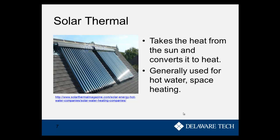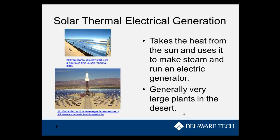Solar thermal is a technology where you take sunlight and heat something up. It's used mostly for hot water and space heating, which is why panels are placed on a rooftop. We also have solar thermal electrical generation. Just like conventional power plants that use heat to create steam to run a turbine, solar thermal plants do the same thing — except the heat comes from the sun instead of fossil fuels.